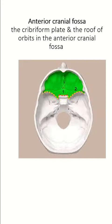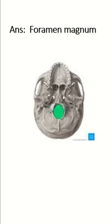The second most commonly fractured cranial fossa is the anterior cranial fossa, involving the cribriform plate and the roof of the orbit. The largest foramina of the skull is the foramen magnum.